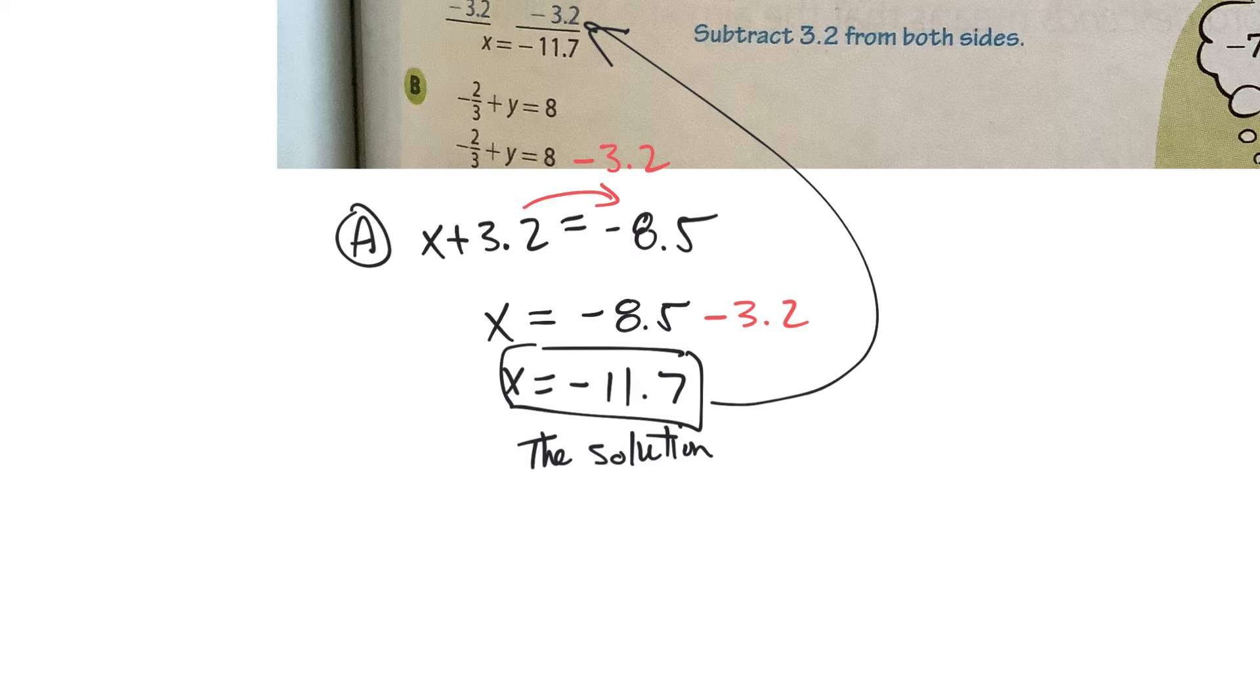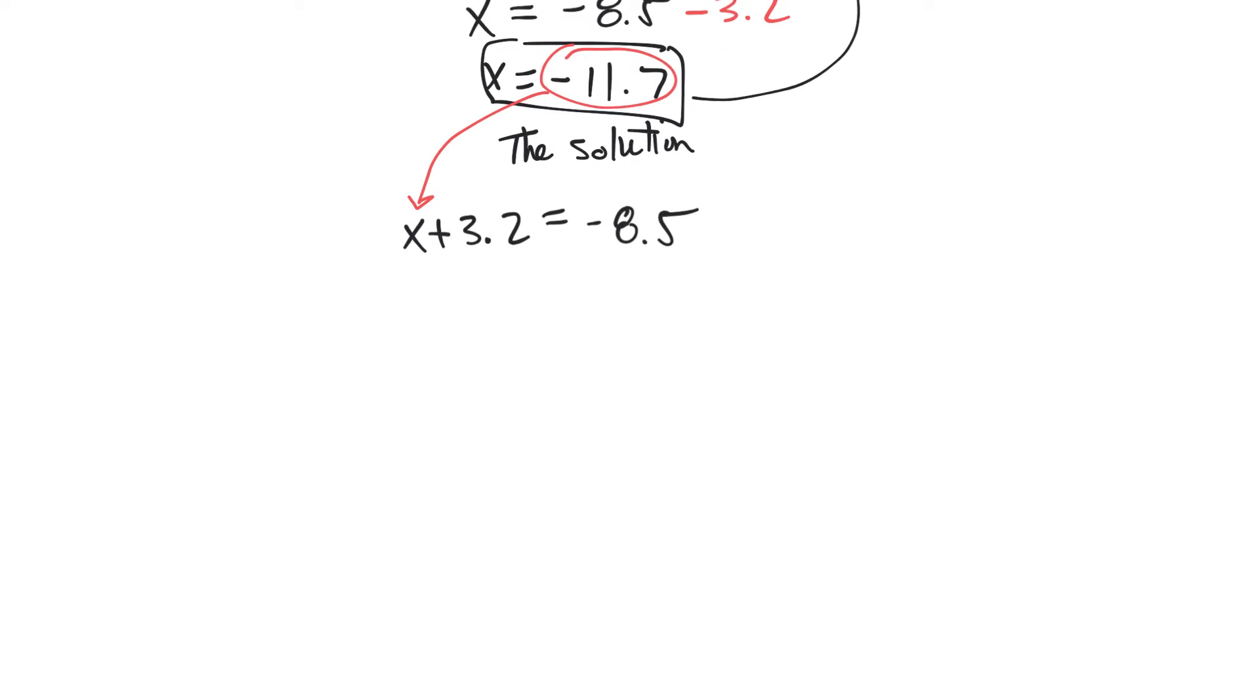How do you know? Well, if you have your original equation, which is this here, that's our original equation. And if I plug in this negative 11.7 in for x, I should get negative 8.5. So I'll bring this up here, and I would have negative 11.7 plus 3.2. If I combine these up, you can even do it in a calculator. You get negative 8.5, which is equal to negative 8.5. And that is said to be a true statement.